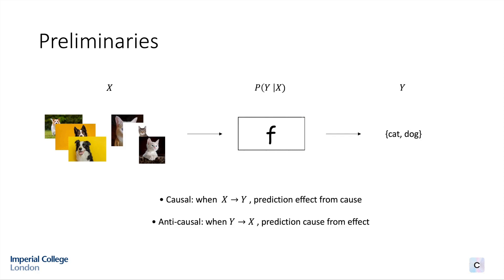Causal reasoning is the analysis of a task in terms of cause and effect relationships between the different variables of interest. In a classification machine learning problem, we want to estimate the conditional probability P of Y given X. A task can be either causal when X causes Y — prediction, effect from cause — or anti-causal when Y causes X — prediction, cause from effect.